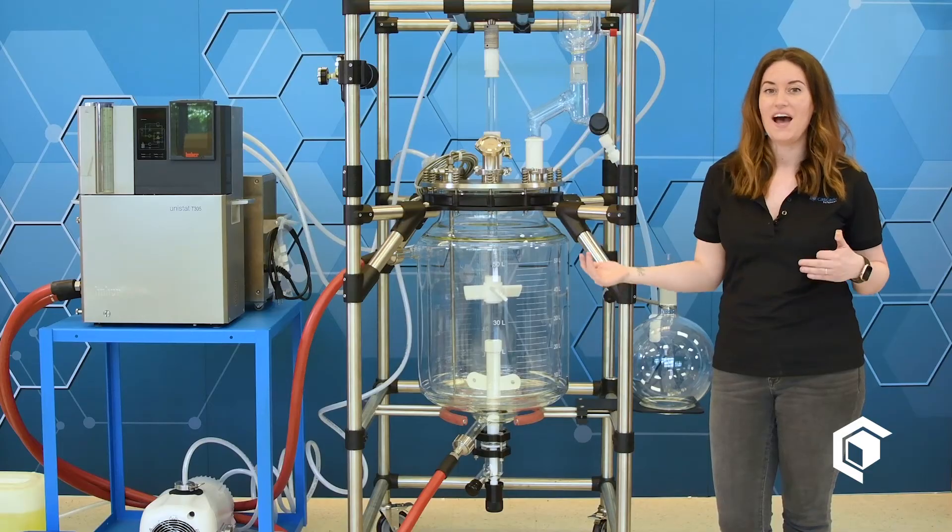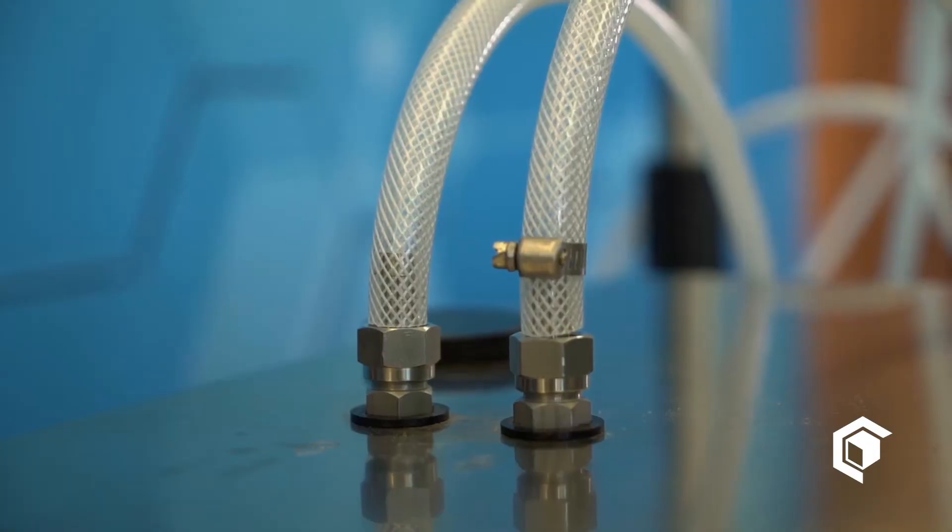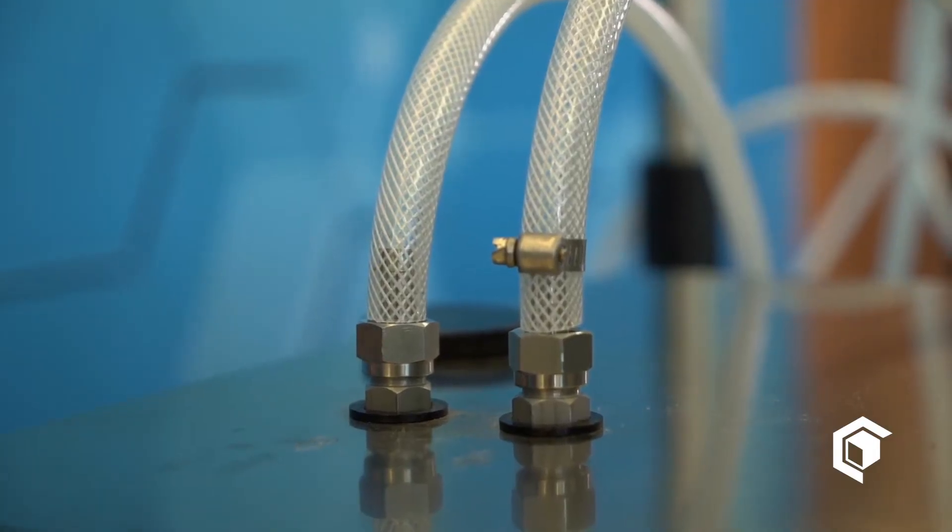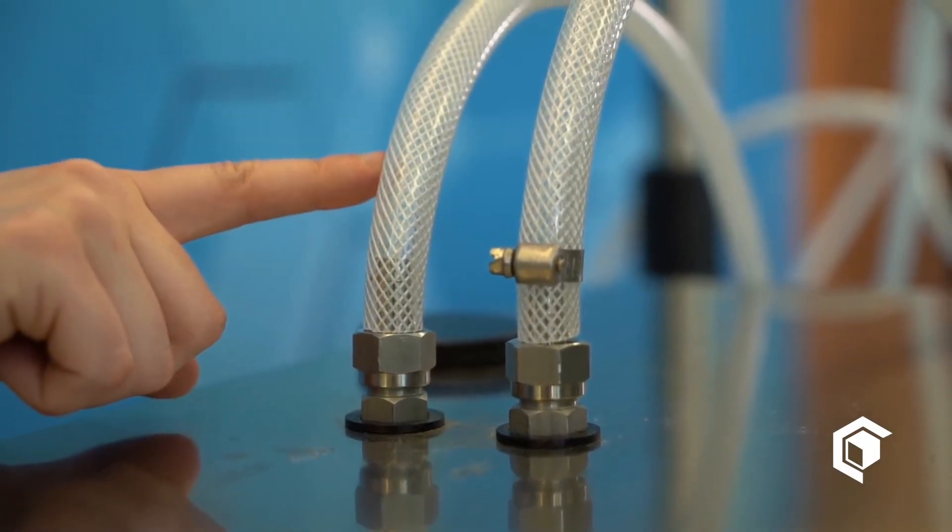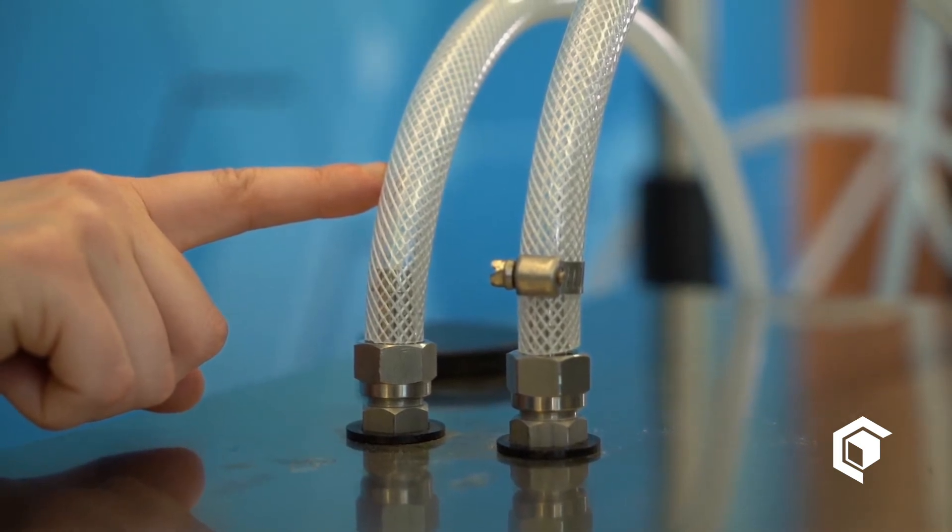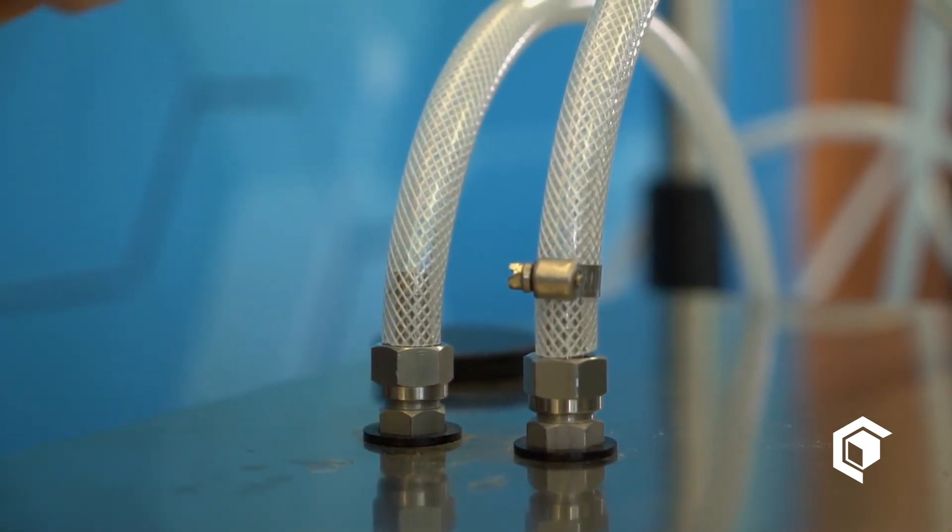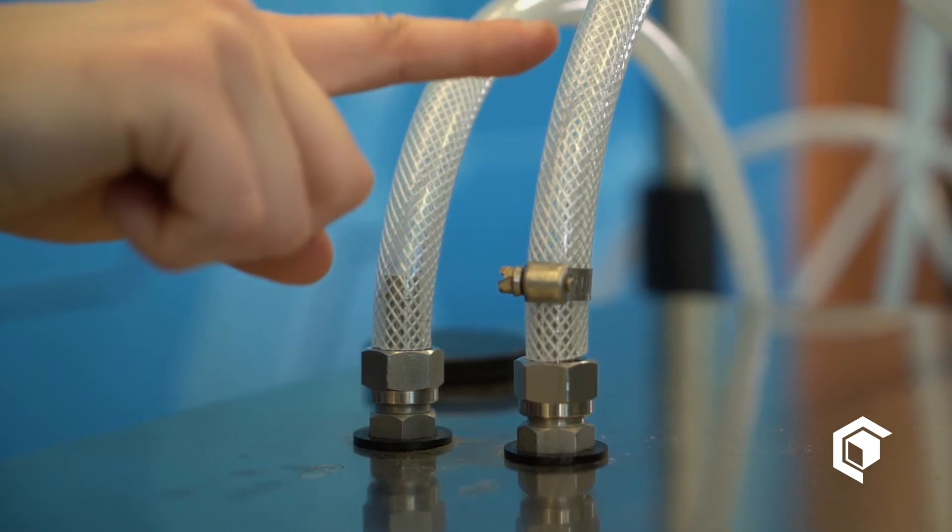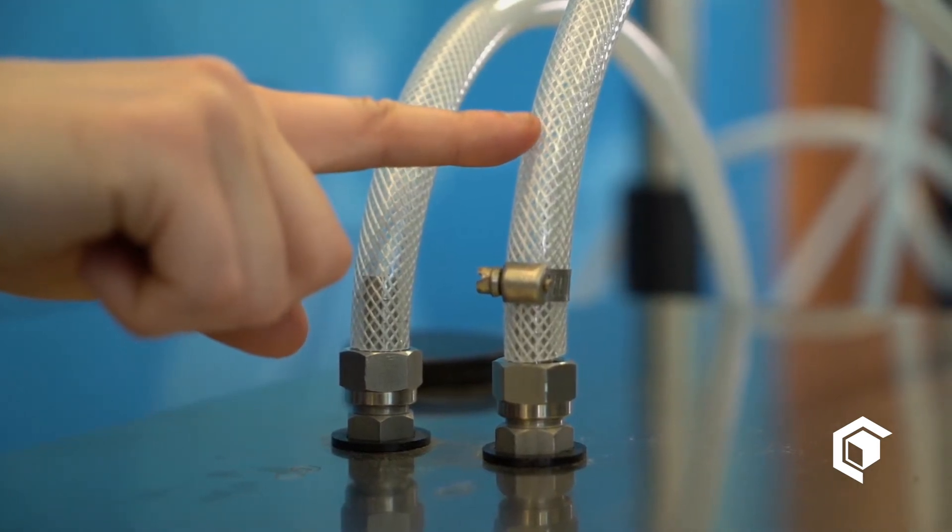Once your condenser is connected to your chiller, we can go ahead and fill it. We like to use an ethylene glycol mixture. So on the left, we have the output, which is connected to the bottom hose barb on your condenser. And on the right, we have the input, which is connected to the second to top barb on the condenser.